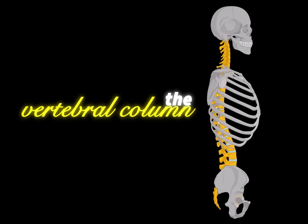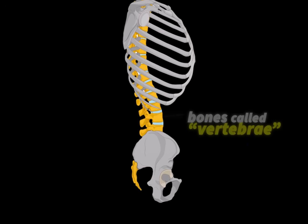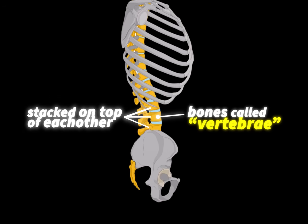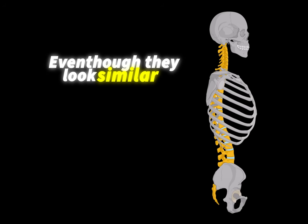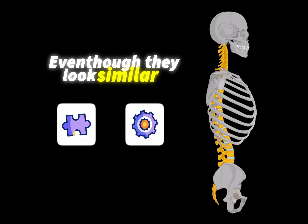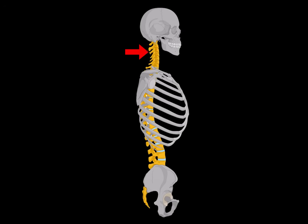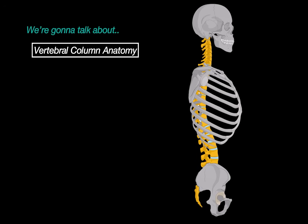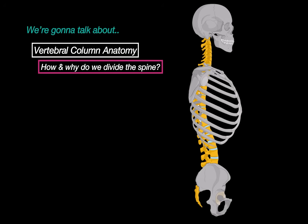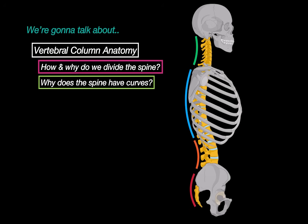Let's talk about the vertebral column. It's made up of bones called vertebrae, stacked on top of each other. Even though they look similar, they actually change shape and function depending on where you are in the spine. The way we're going to understand the full anatomy of it is by first answering the questions: how and why do we divide the spine into different regions, why does the spine have curves, and what happens if those curves go wrong.